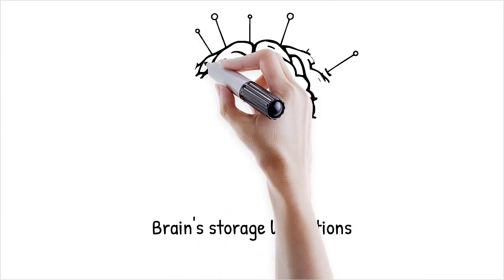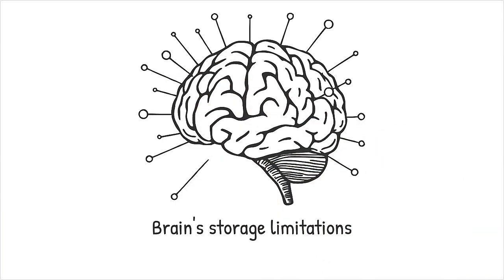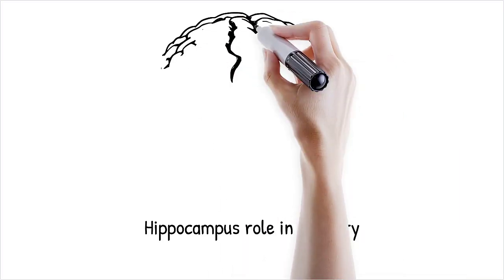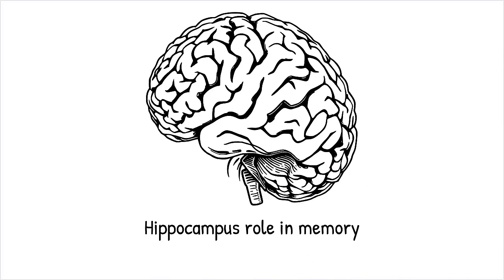The brain does not store raw data like a hard drive, but instead compresses useful patterns and associations. The hippocampus responsible for memory filters out irrelevant information, discarding details that do not seem important.